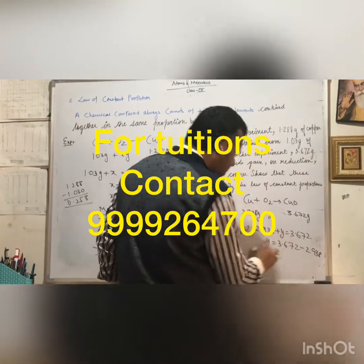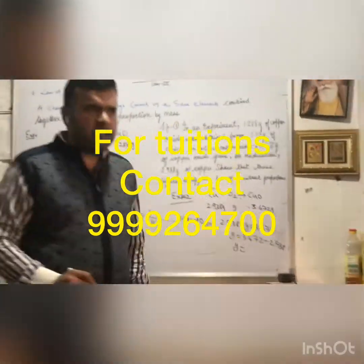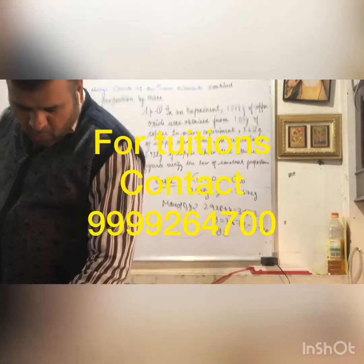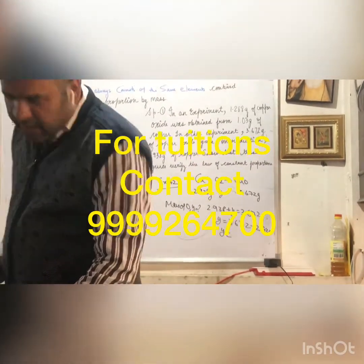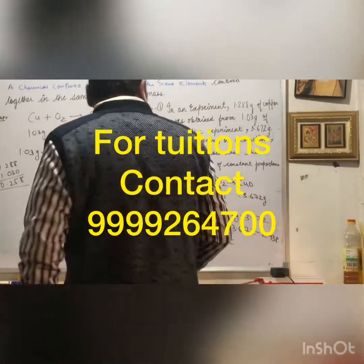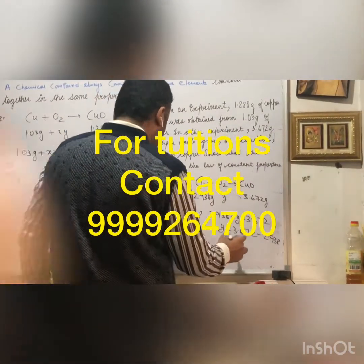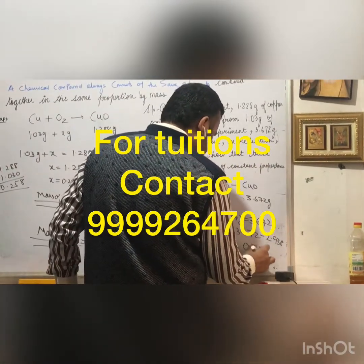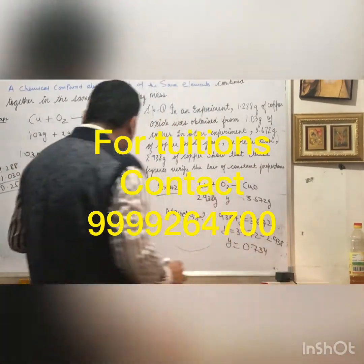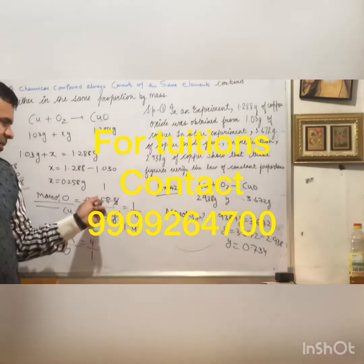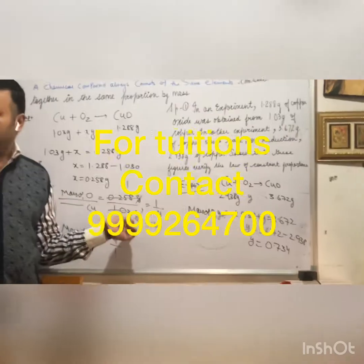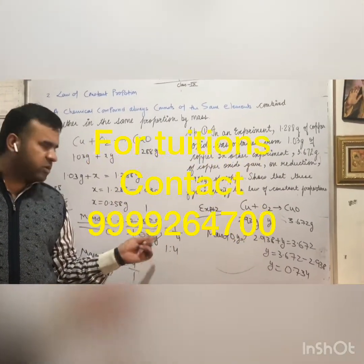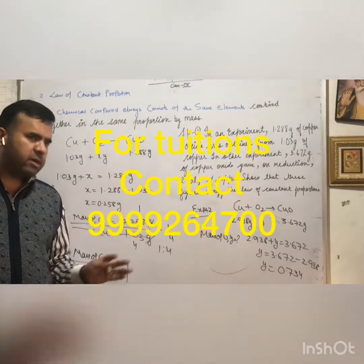If you subtract 3.672 minus 2.938, you get the value of Y, which gives us the mass of oxygen. The copper and oxygen mass ratio can then be calculated.